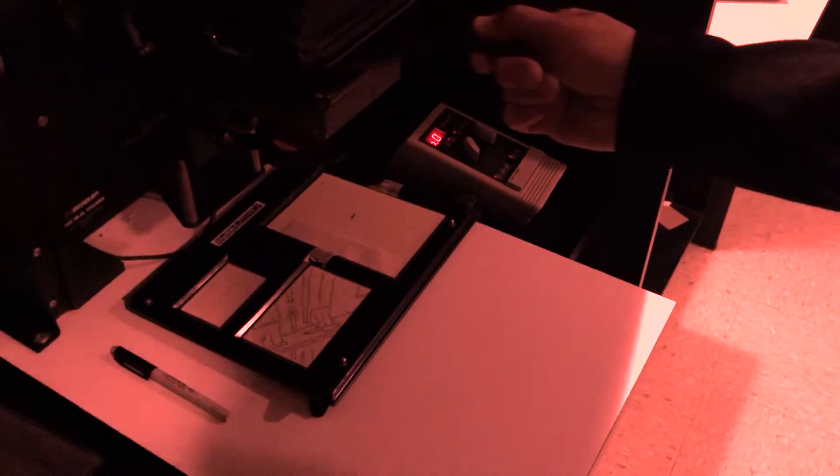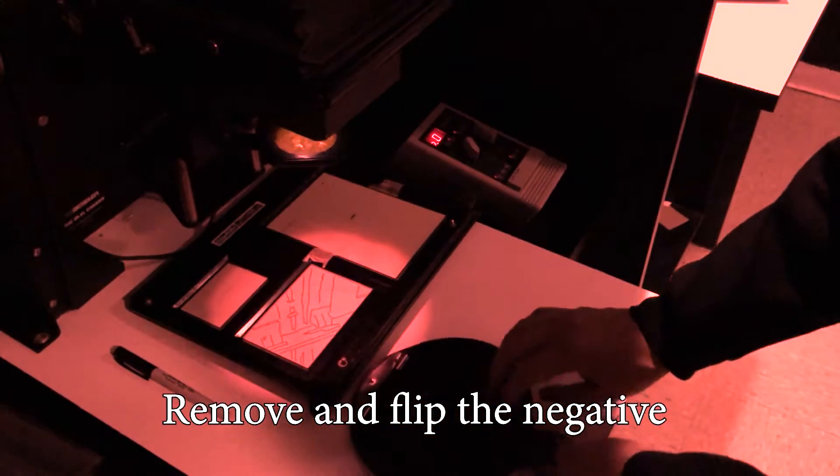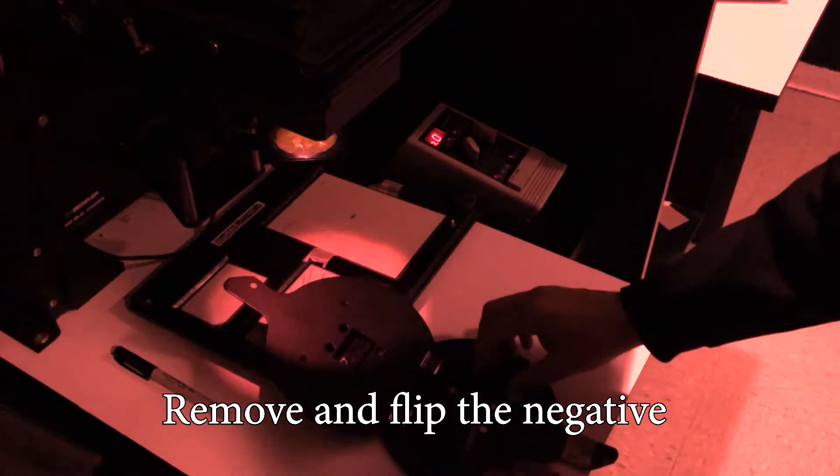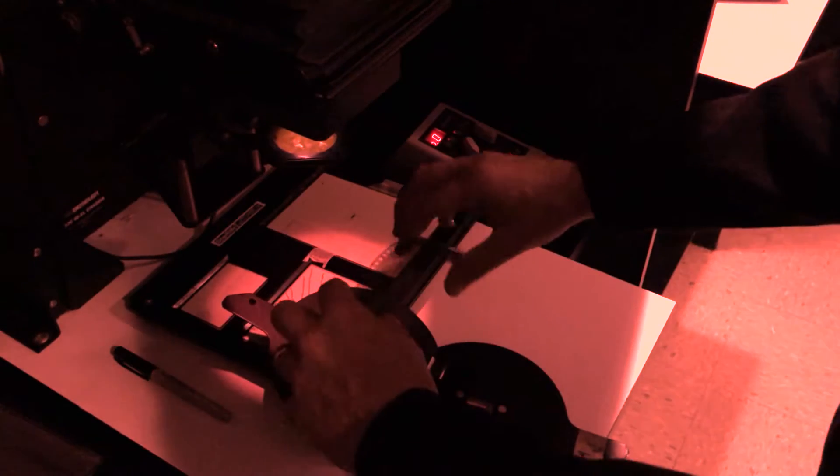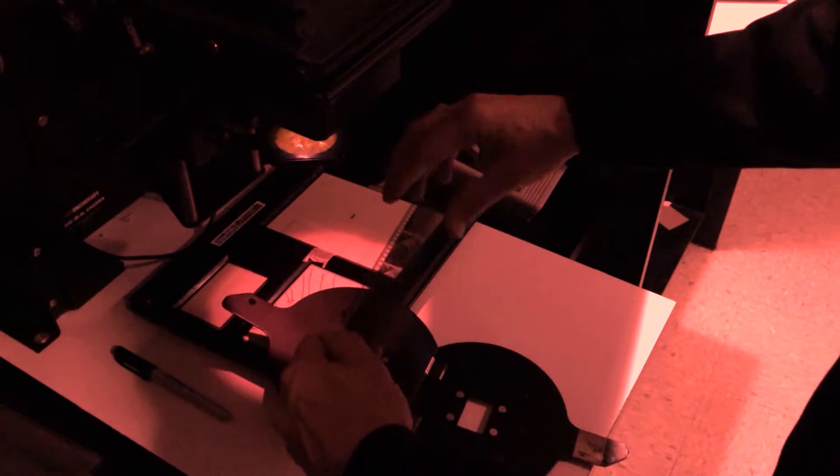Now take the negative carrier out of the enlarger. Open it up, take the negative out, and flip it emulsion up. So it was emulsion down. Now it's emulsion up. So they will be backwards.